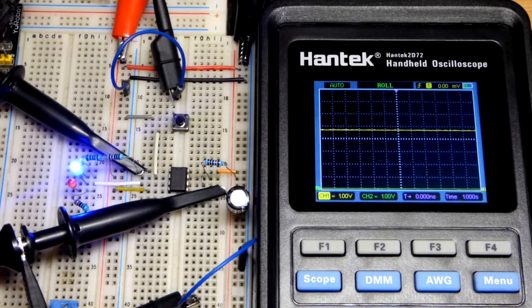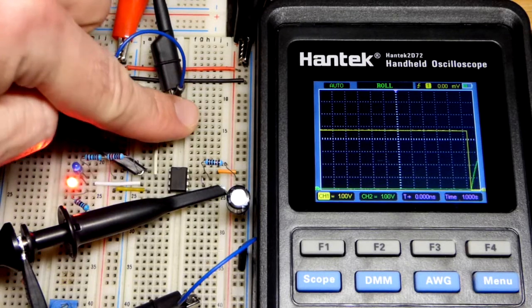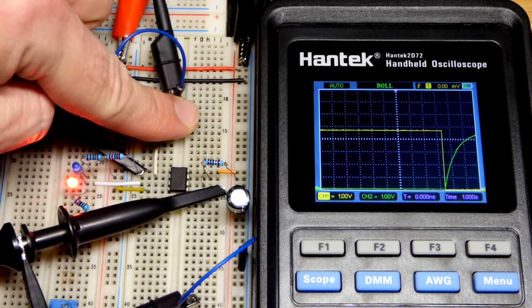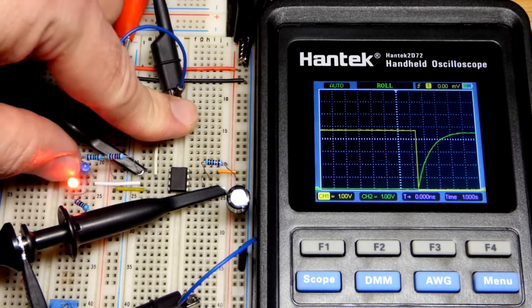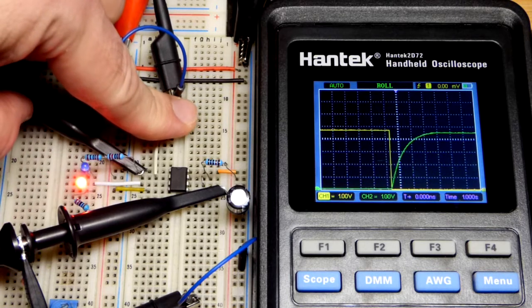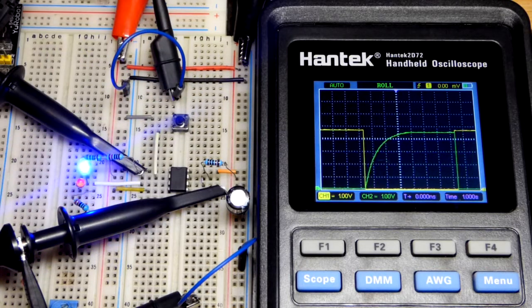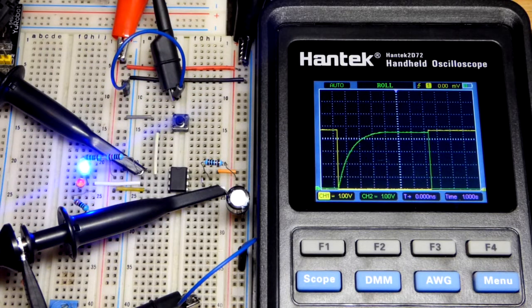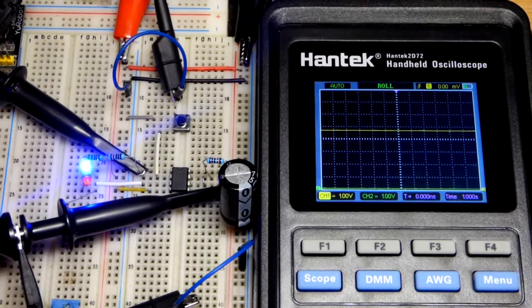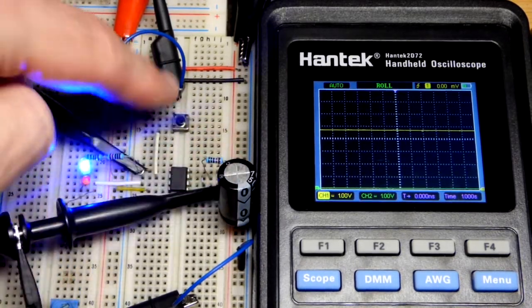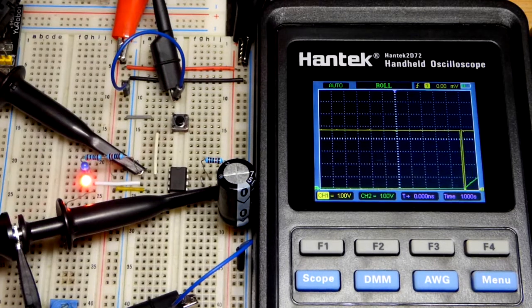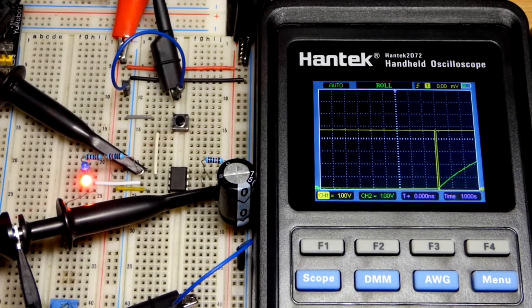If you hold the button for too long, the capacitor just keeps charging and the output stays high. But as soon as we let go, it will set the output low and the capacitor will discharge. Again, we can use more capacitance to slow things down or we could use a larger timing resistor.